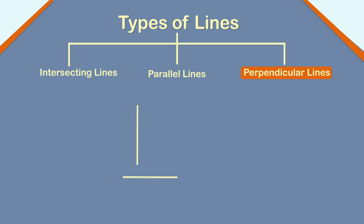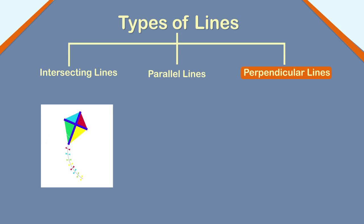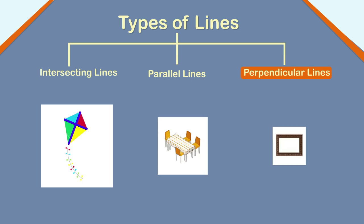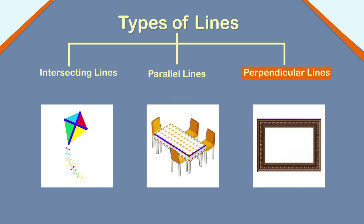Two lines which intersect and make a right angle at a common point are called perpendicular lines. Line PQ and line RS intersect at point O and make a right angle at point O. Thus, line PQ and line RS are perpendicular to each other. The arrangement of the wooden sticks of a kite is an example of perpendicular lines. Other examples are edges of a table or photo frame.